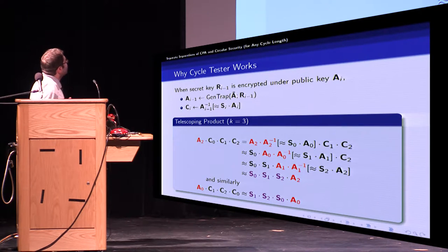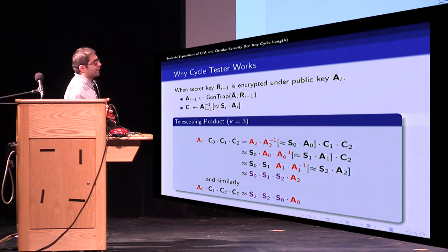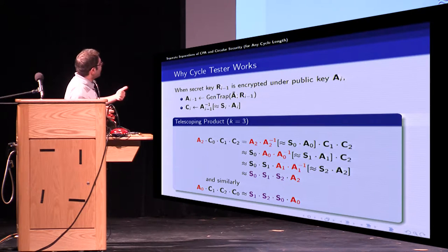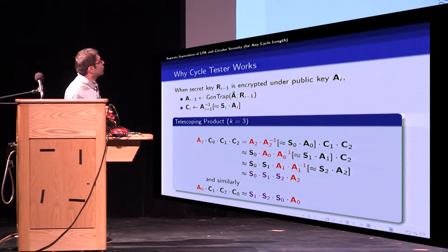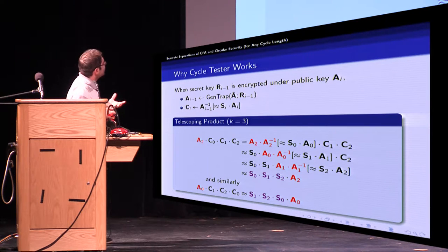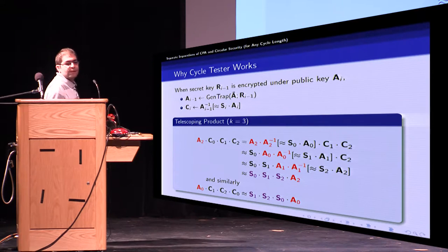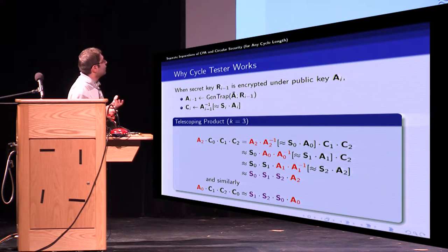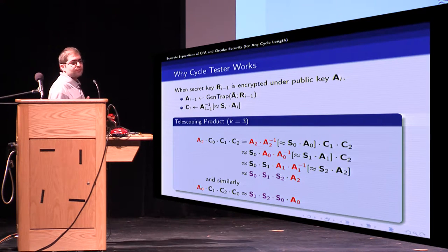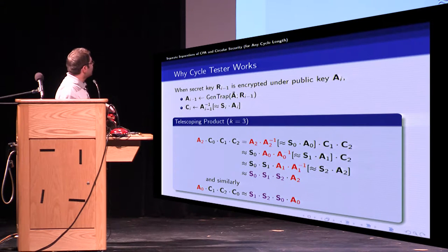Okay let's see what cycle tester computes. If we have a look on telescoping product for K equals 3 in the first line we could rewrite C_0 as A_2 inverse of S_0 A_0. Here we see that A_2 and A_2 inverse annihilate each other and what's left is S_0 A_0 C_1 C_2 up to small noise. In the second line again we can rewrite C_1 as A_0 inverse of S_1 A_1 and then A_0 and A_0 inverse annihilate each other and then doing similarly finally we get S_0 S_1 S_2 A_2.